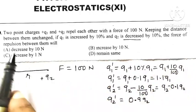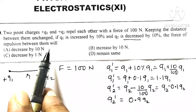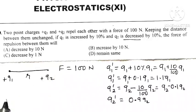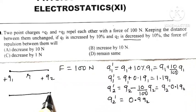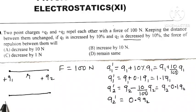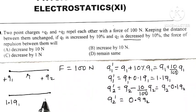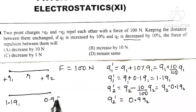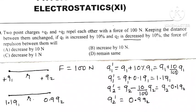There is no change in the distance between the charges. So in the second situation we have charges 1.1 Q1 and 0.9 Q2, still separated by the same distance R.